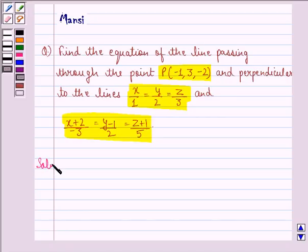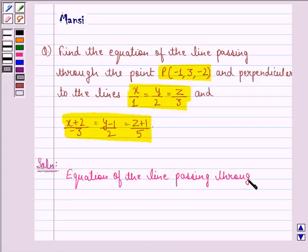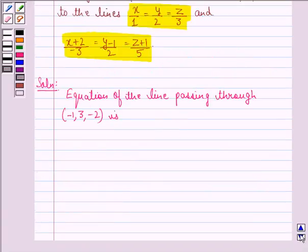So, let us see the solution to this question. First of all, the equation of the line passing through minus 1, 3, minus 2 is x plus 1 upon A is equal to y minus 3 upon B is equal to z plus 2 upon C. This we call equation 1.